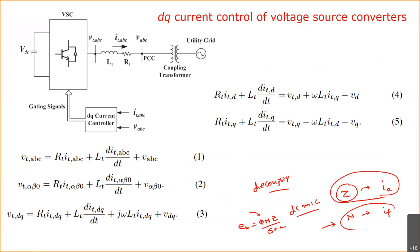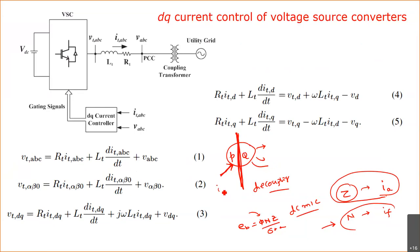The same concept applies to the decoupled control of grid-integrated circuits. Here we have P and Q — grid active power and reactive power — representing how much power we inject into or take from the grid. When you control P, you can keep Q constant or at different levels, so there is a complete separation between P control and Q control. Active power is controlled by the I_D component and reactive power by the I_Q component.